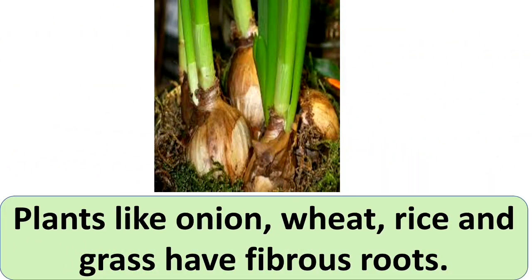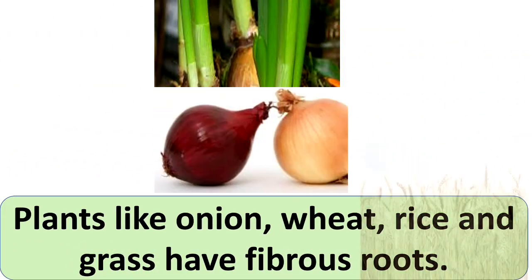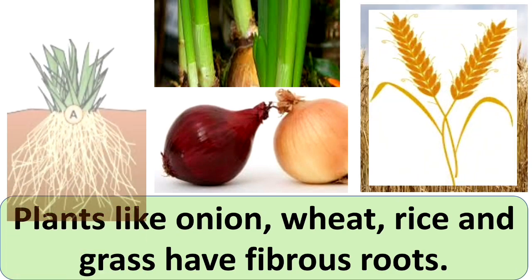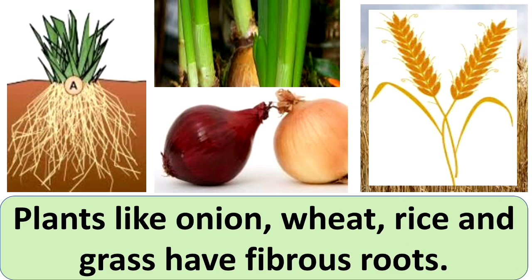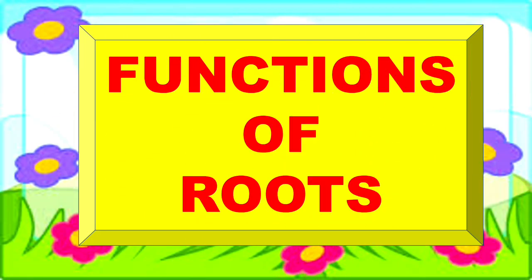Plants like onion, wheat, rice, and grass have fibrous roots. These are the examples of fibrous root.